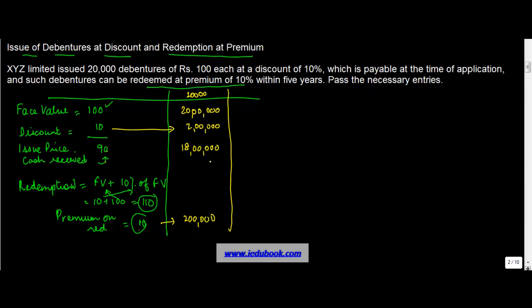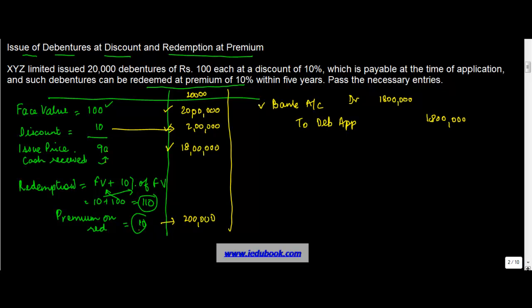Let us now see what entries need to be passed. The first entry is when you receive money on application. You receive Rs. 18,00,000 at the time of application because even though the face value is Rs. 20,00,000, there is a discount of Rs. 2,00,000. So the entry is: Bank Account Dr. to Debenture Application Account — Rs. 18,00,000.